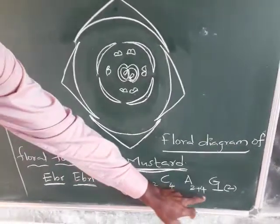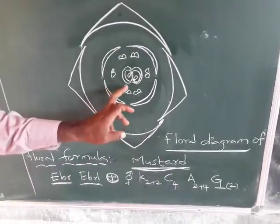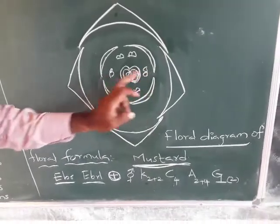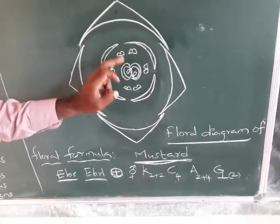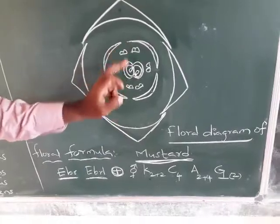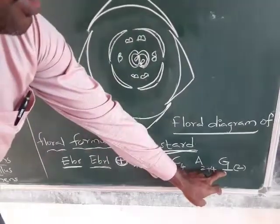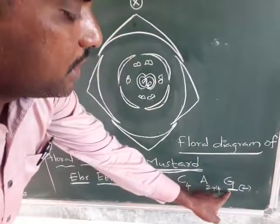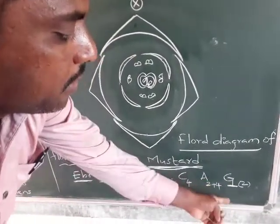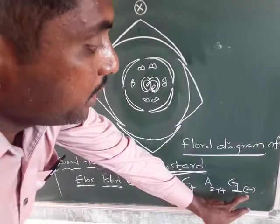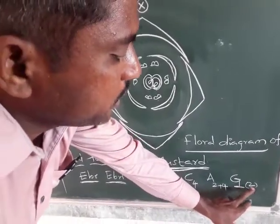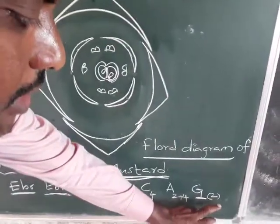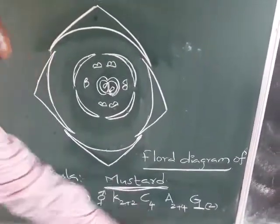The androecium is 2 plus 4 — two shorter and four longer stamens. The gynoecium has a line below the G, which indicates superior ovary. It is bicarpellary syncarpous, with 2 carpels united, giving a bicarpellary syncarpous superior ovary.